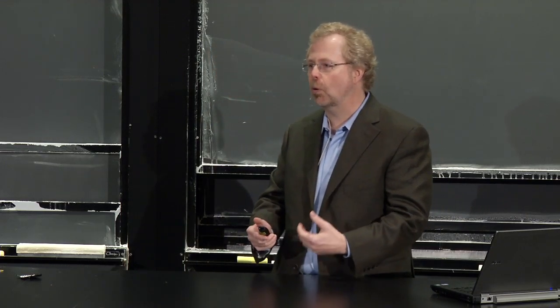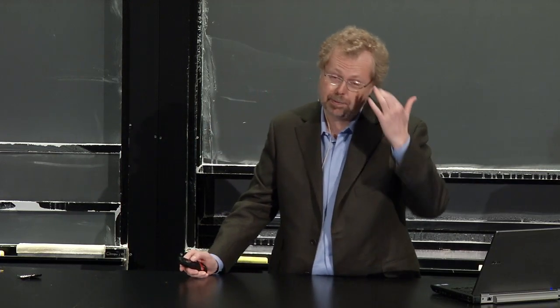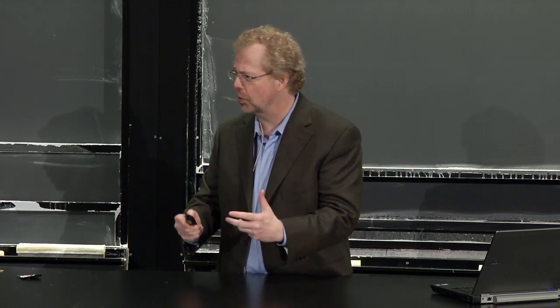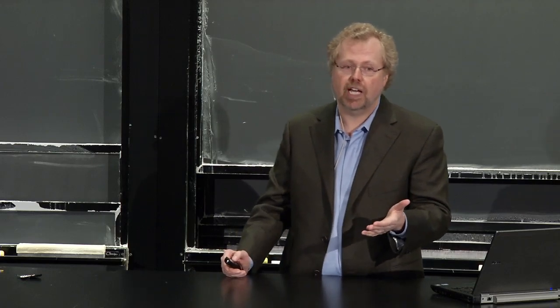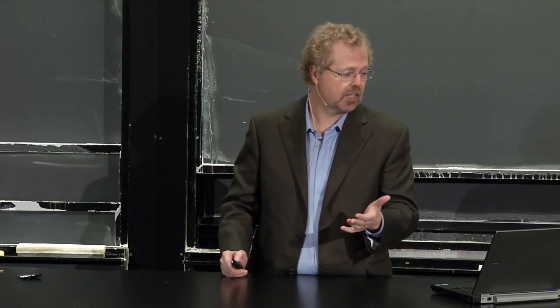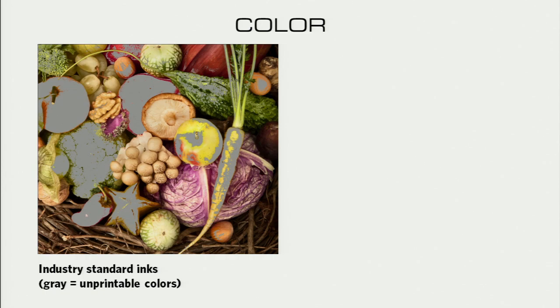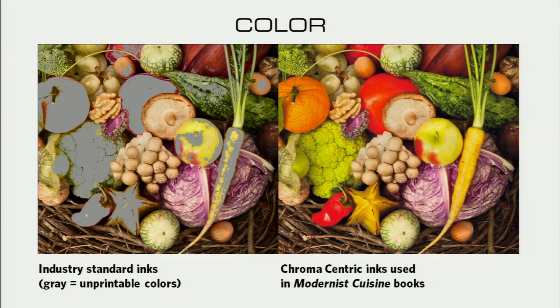We had a big focus on photos because it's important to show what food looks like. People ask what camera we used because the pictures are so vibrant—but it's not the camera, it's the ink. It turns out you can't represent every color with an arbitrary set of inks. Where the picture is gray are colors that ordinary printing inks cannot reproduce—highly saturated colors like tomato red, orange, or the chartreuse green of cauliflower. You can't get those unless you buy the fancy ink.